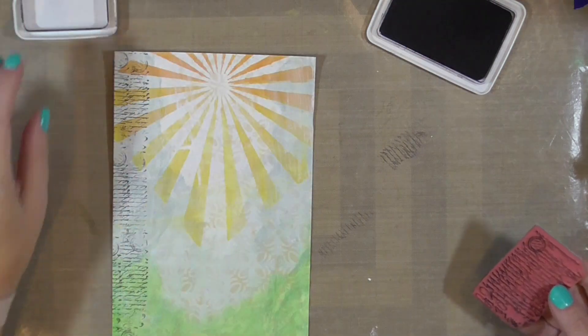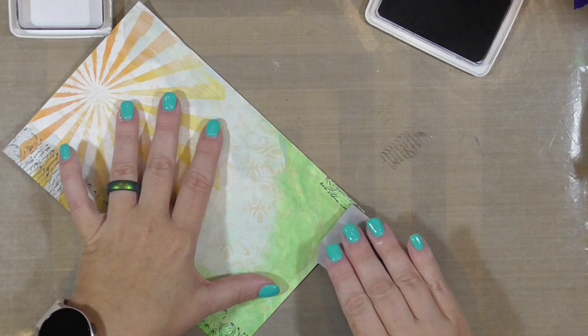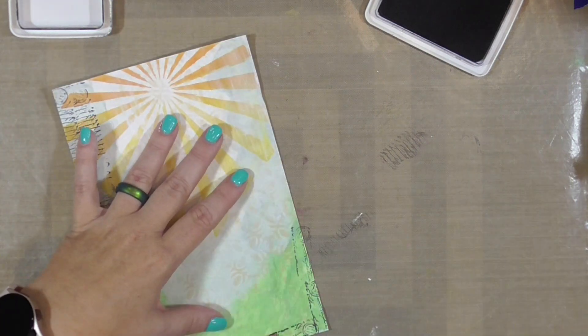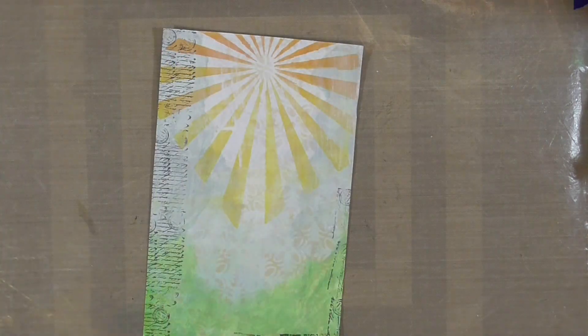So to add a little bit of black to the background, I grabbed this Tim Holtz Stampers Anonymous text stamp and some archival ink. And I'm just going all the way around the left side or up and down the left side. And then just a little bit on the bottom.